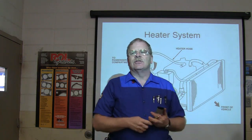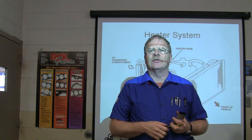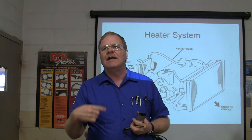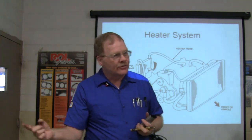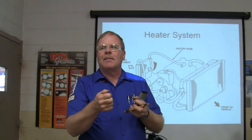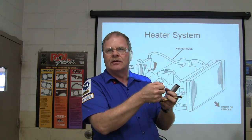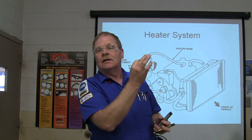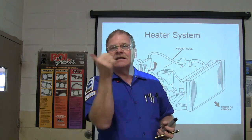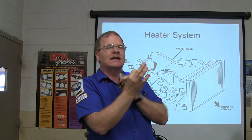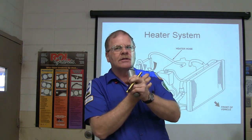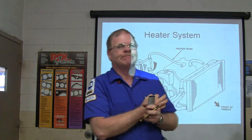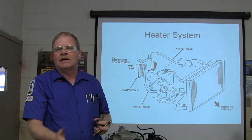As soon as you crank up the car — before the thermostat opens — the water pump starts shoving coolant straight through the heater core. The hose coming from the engine is supposed to be the smaller one with the little orifice; the one going back to the engine is the bigger one without an orifice. If both tubes were the same size and you hooked them up backwards, you'd build pressure and bust the heater core.